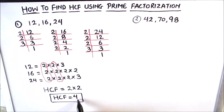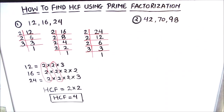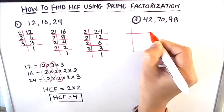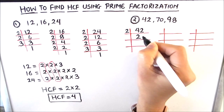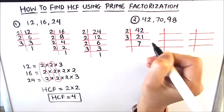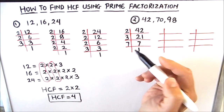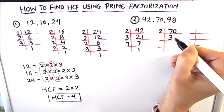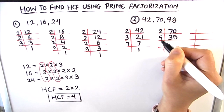So the HCF of 12, 16, and 24 is 4 — the highest common number which can divide all three fully. Now let's look at the second example: finding the HCF of 42, 70, and 98. We'll find the factors of all three numbers separately. 42 is even so divisible by 2: 2 times 21 is 42. 21 is odd, so we try the next prime, 3: 3 times 7 is 21. 7 is prime: 7 times 1 is 7.